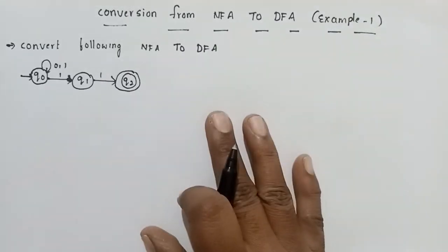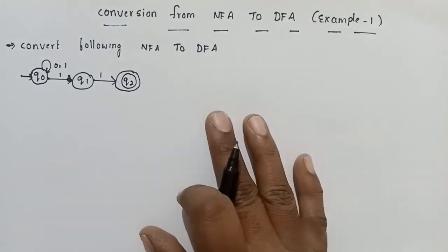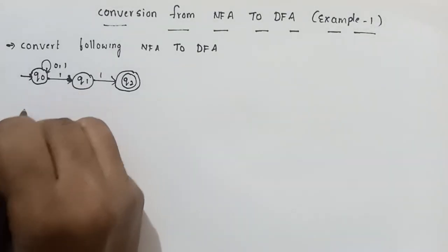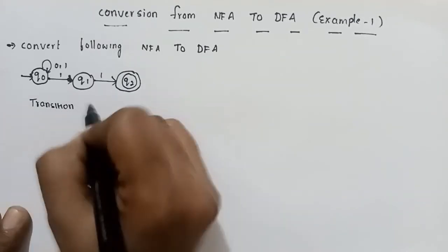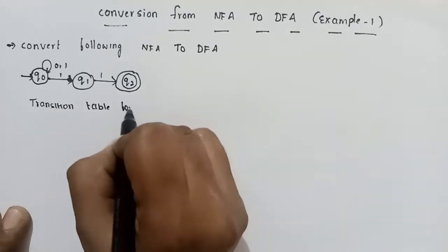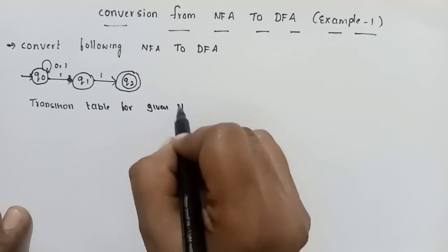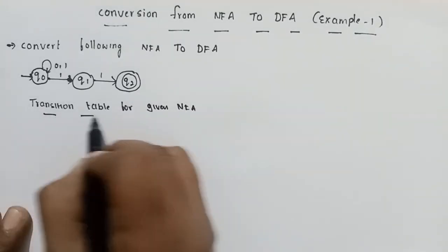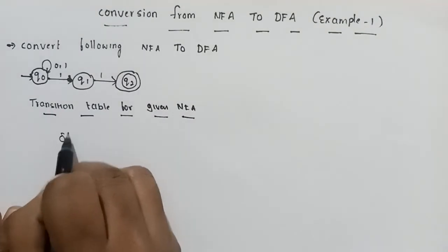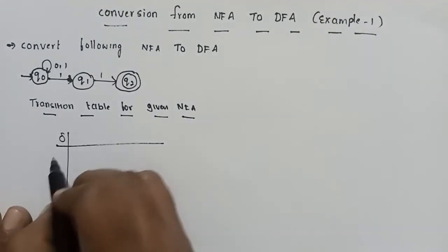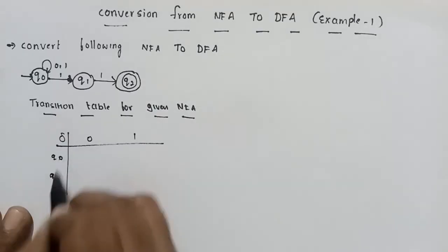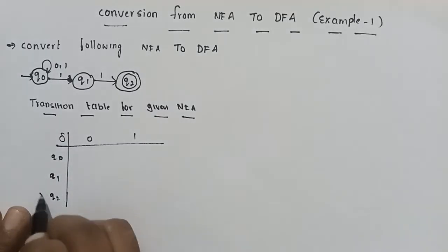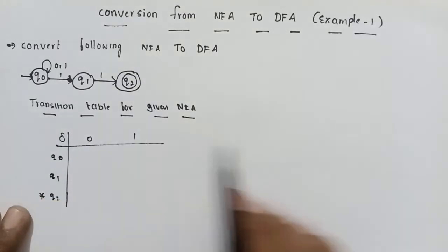The first step is to write the transition table for the given NFA. The input symbols are 0 and 1. The states are Q0, Q1, and Q2. Here Q2 is the final state, shown with a double circle. The initial state is marked with an arrow.